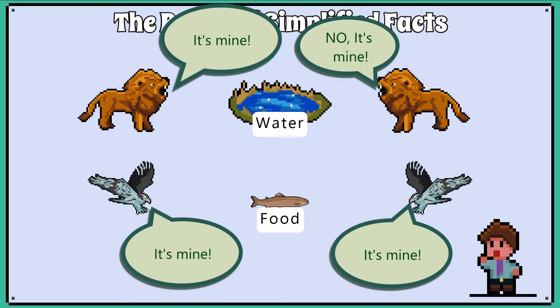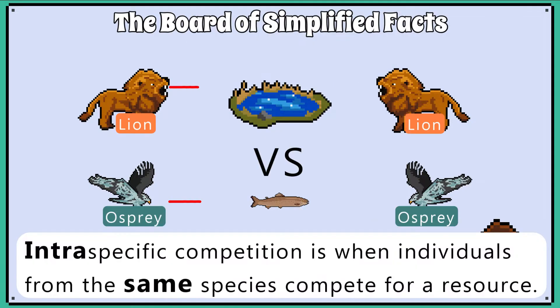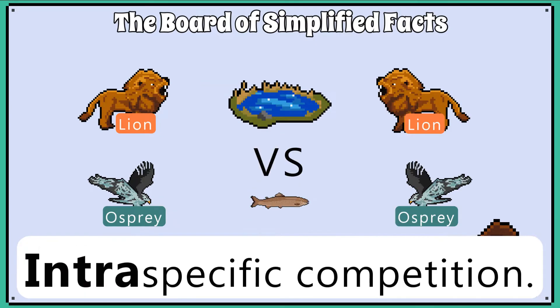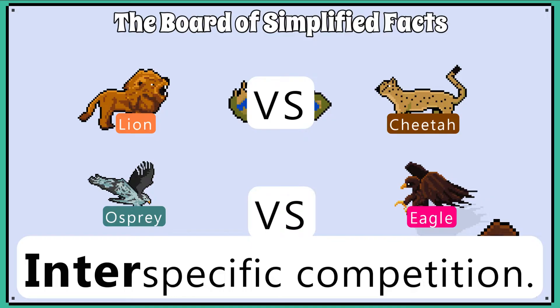Organisms compete for these resources. If we have two individuals from the same species competing for these resources, then we call it intraspecific competition. If we have two individuals from different species competing for these resources, then we call it interspecific competition.